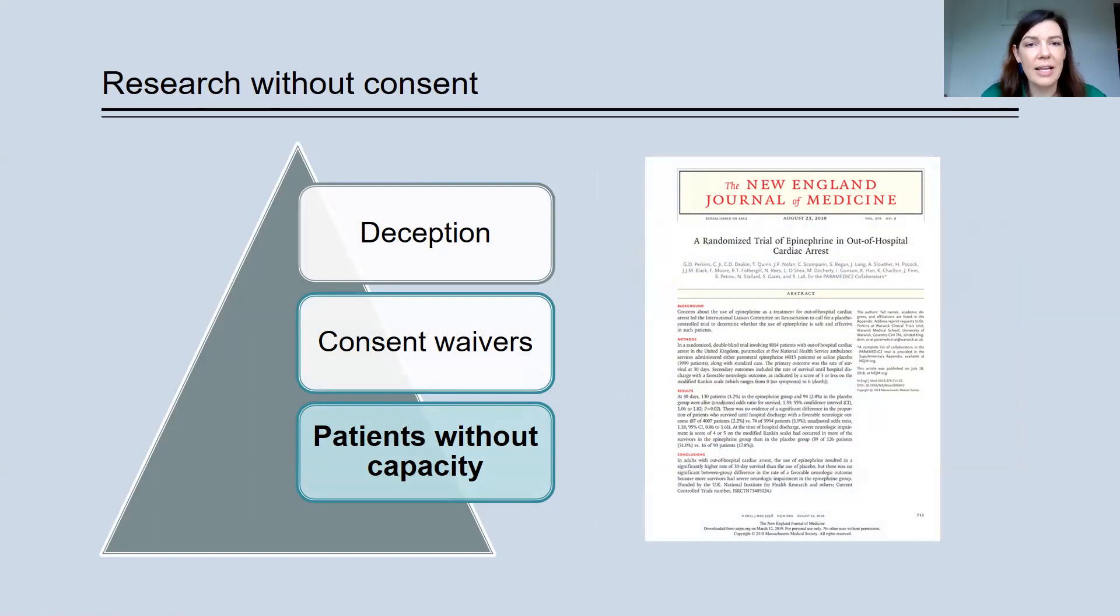So for example, that might include older adults that lack capacity. This is an example. This study is of adults who have experienced cardiac arrest and are therefore in the middle of a health emergency and aren't in a position to be able to participate in a participant information sheet and consent process.